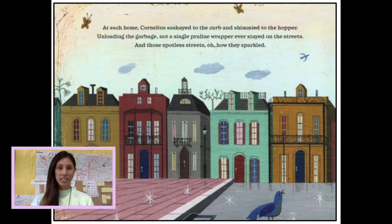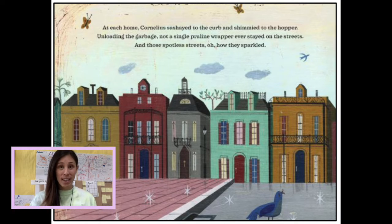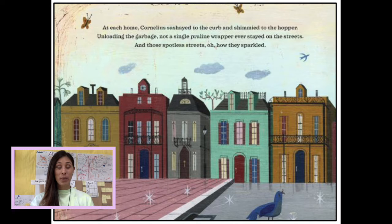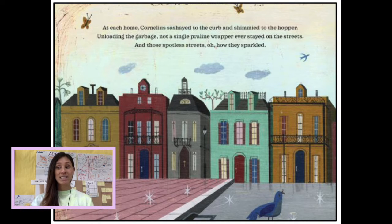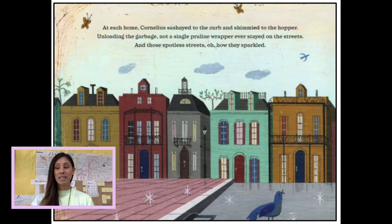We all read Marvelous Cornelius together and discovered that Cornelius was a real person — he actually existed, was a resident of New Orleans, and was a garbage man. He really did believe in doing your best at anything you did, and for him that was cleaning the streets of New Orleans. We also know that Hurricane Katrina actually really did happen; that's a historical event and not someone's opinion. But when I reread this page, I think parts of it are actually opinions — listen closely and see if you can find what I'm thinking.